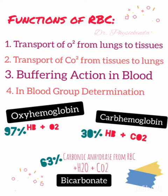Moving on to the functions of red blood cells — there are four important functions: transport of oxygen from lungs to tissues, transport of carbon dioxide from tissues to the lungs, buffering action in blood, and blood group determination. Hemoglobin in RBCs combines with oxygen to form oxyhemoglobin; about 97% of oxygen is transported in blood in the form of oxyhemoglobin. Hemoglobin also combines with carbon dioxide to form carbohemoglobin, and about 30% of carbon dioxide is transported in this form.